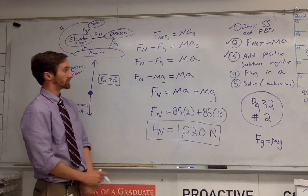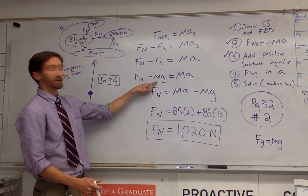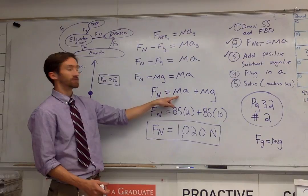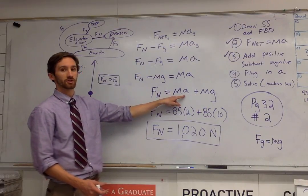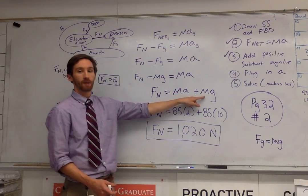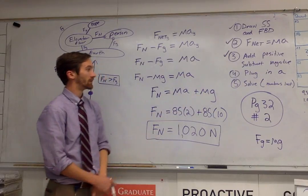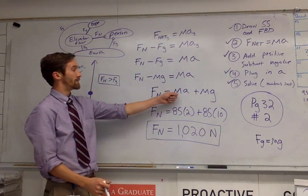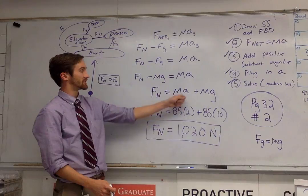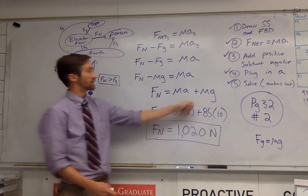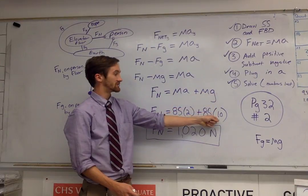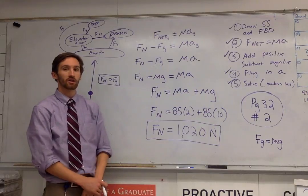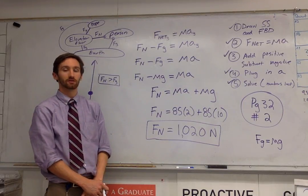Now we can solve by putting in the numbers. So mass is 85, the problem told us that the acceleration is 2, and little g is 10. When we multiply that and add them together, it tells us that normal force is 1020 newtons.